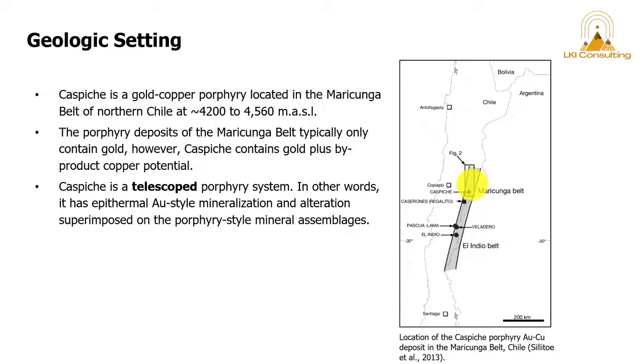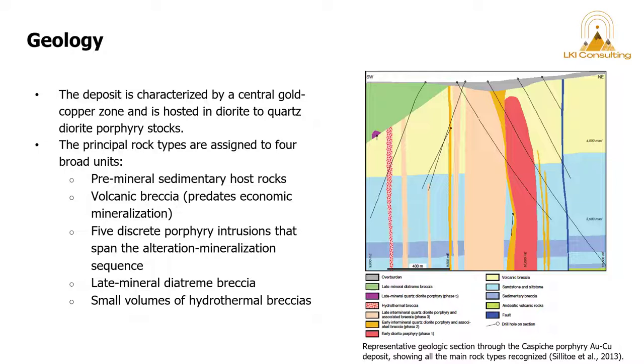Caspiche is a telescoped porphyry system, so in other words it has epithermal gold style mineralization and alteration superimposed on the porphyry style mineral assemblages. The next two slides are taken from Sillito et al. 2013. I want to draw everyone's attention to the sub-horizontal volcanic clastics and sedimentary host rocks, as well as five discrete porphyry intrusions.